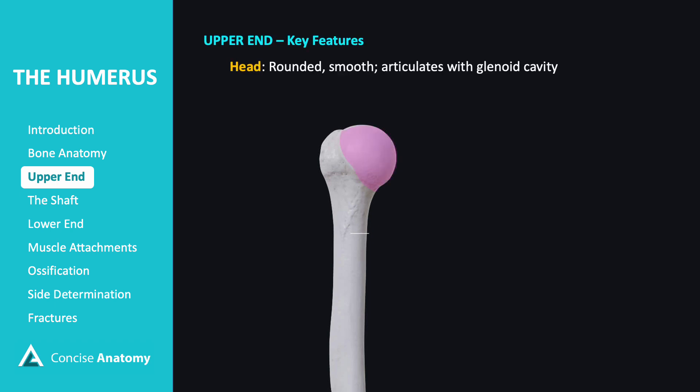The head is rounded and smooth, articulating with the glenoid cavity to form a ball and socket joint of the shoulder.